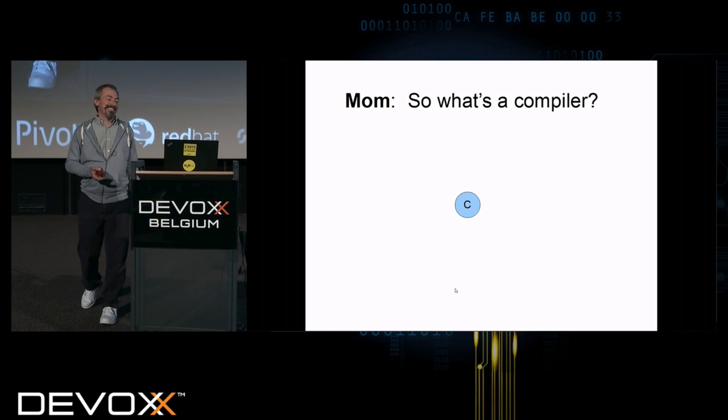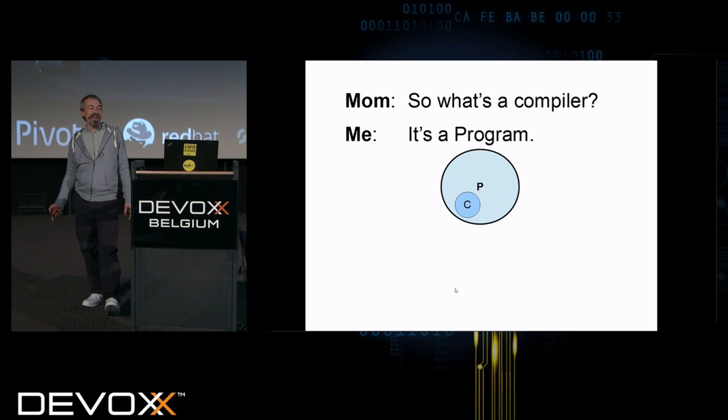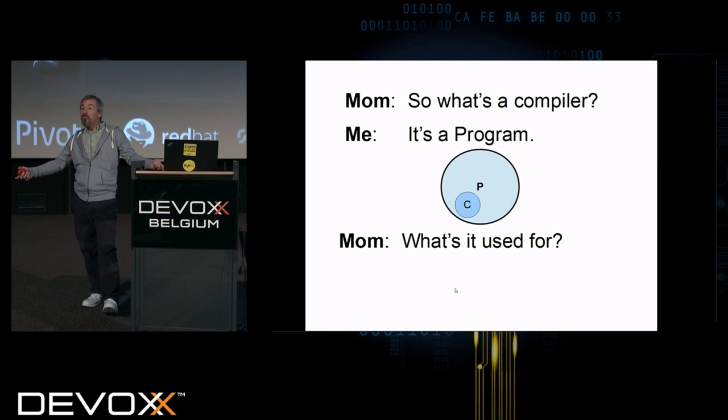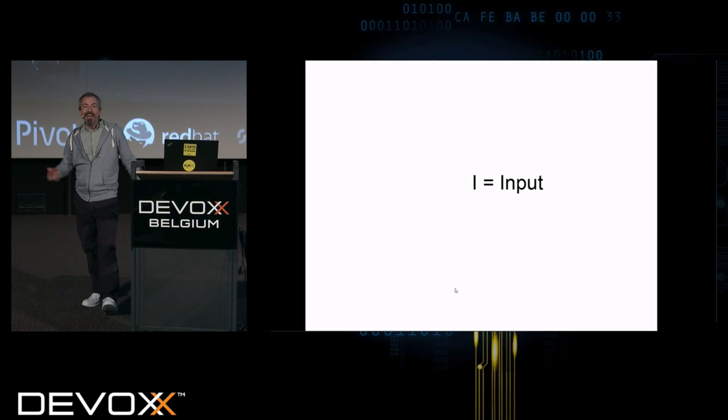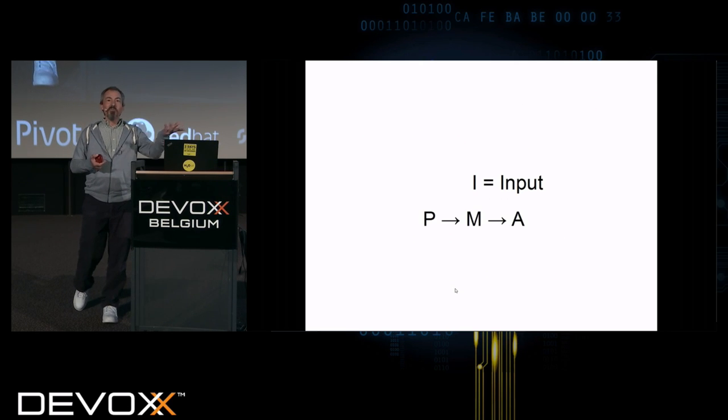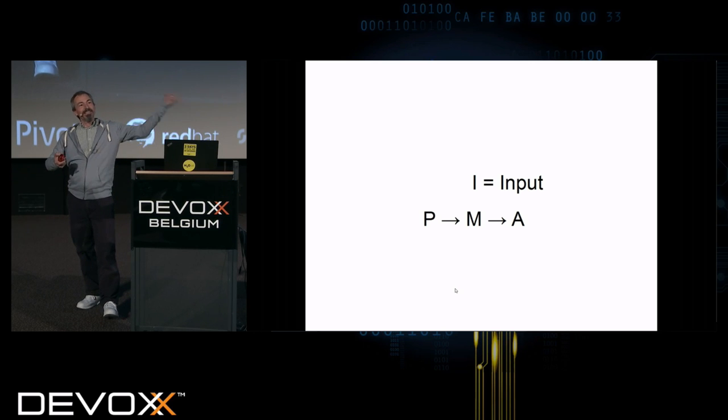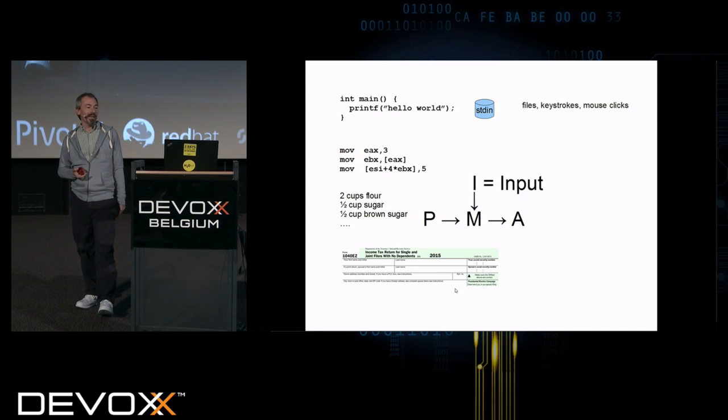So what's a compiler? Well, it's a program. And what's it used for? Let's talk about IO for a second here. I for input.